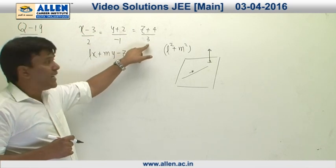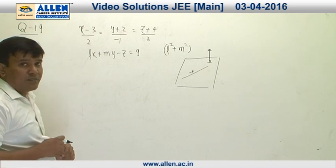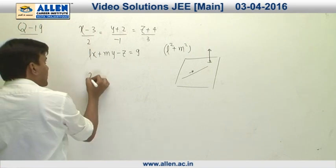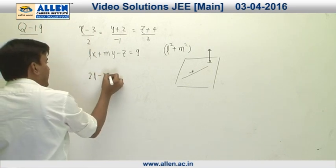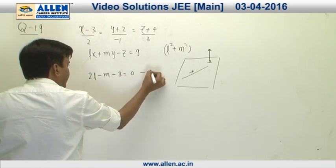We can see the direction ratio of this line is 2, minus 1, and 3, and the direction ratio of the normal to this plane is l, m, and minus 1. So their dot product equals 0 will give us 2l minus m minus 3 equal to 0. This will be equation number 1.